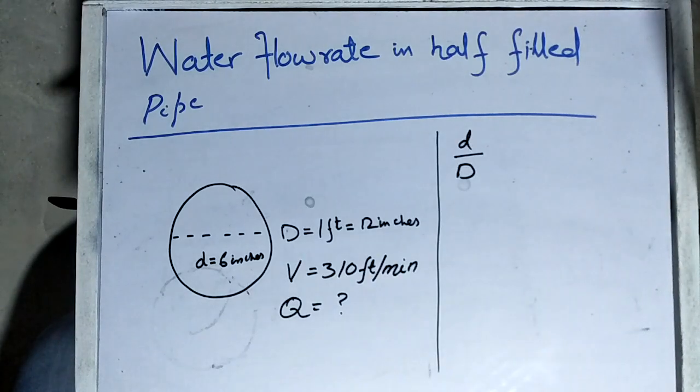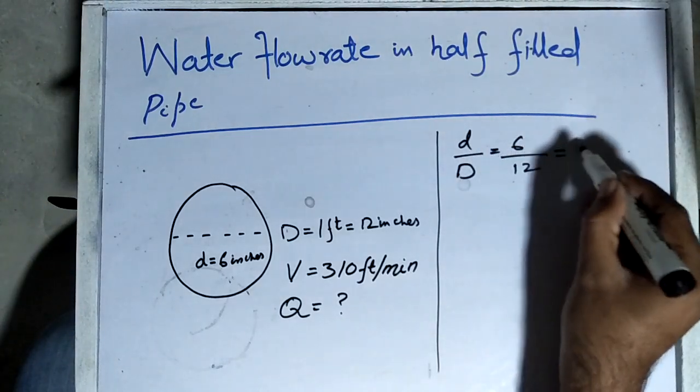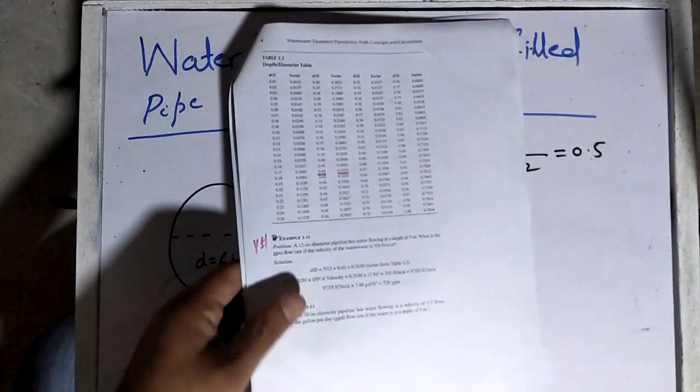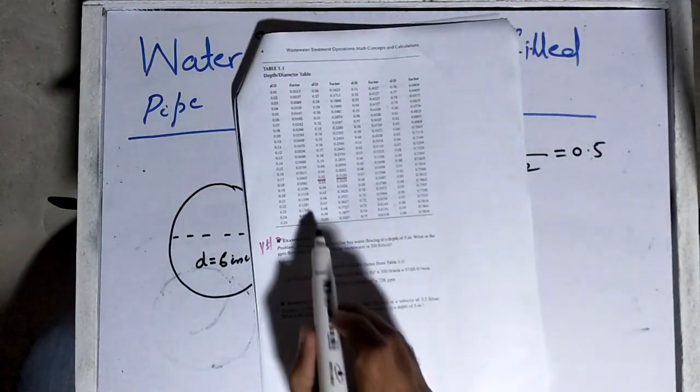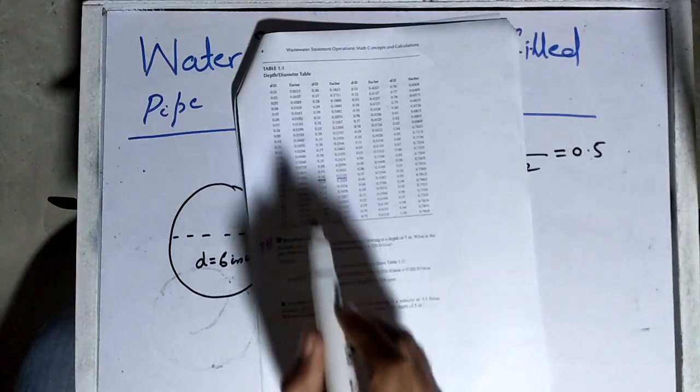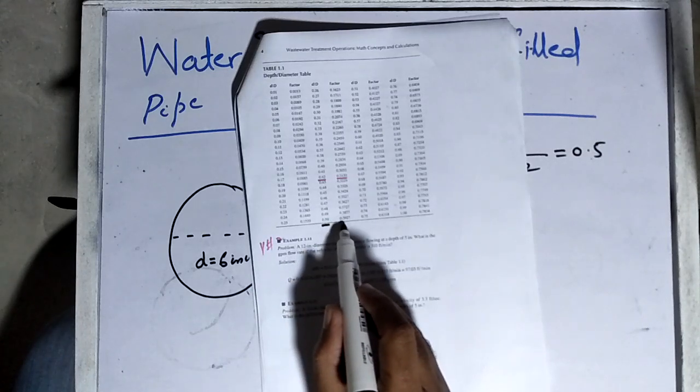We will get 0.5. Then we need to consider a chart. As you can see, this chart shows d/D, small d upon capital D, has a value of 0.50, and against it the factor is 0.3927. So we get the factor 0.3927.